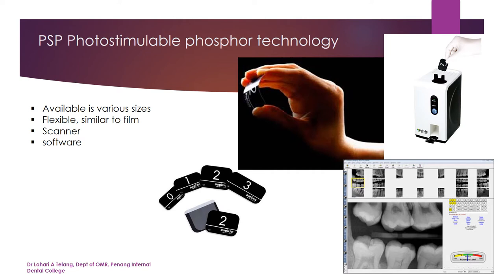The advantage of PSP is that it's more flexible and very thin, similar to film, so it fits well into the contours of the oral cavity. It comes with a scanner — after the PSP imaging plate is exposed to x-ray radiation, you take off the barrier envelope, and the sensor goes through a laser scanner. The sensor comes out, can be reused, and you get the image within 10 seconds on your screen.